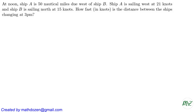Welcome everybody! In this problem we are going to work on the following problem. Given that at noon, Ship A is 50 nautical miles due west of Ship B, Ship A is sailing west at 21 knots, and Ship B is sailing north at 15 knots — the question is: how fast is the distance between the ships changing at 3 p.m.?